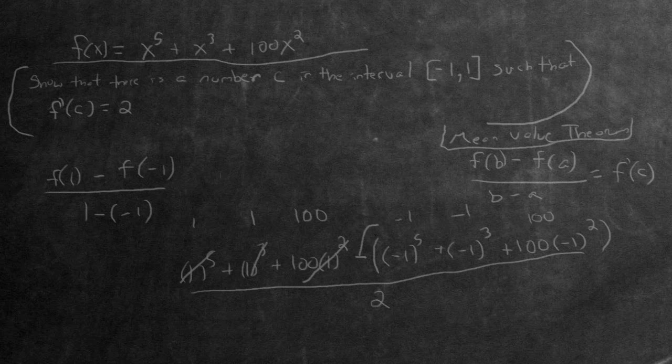When we subtract f(-1), we distribute the negative throughout: the -1 terms become positive, and the +100 becomes -100. The 100 and -100 cancel out.